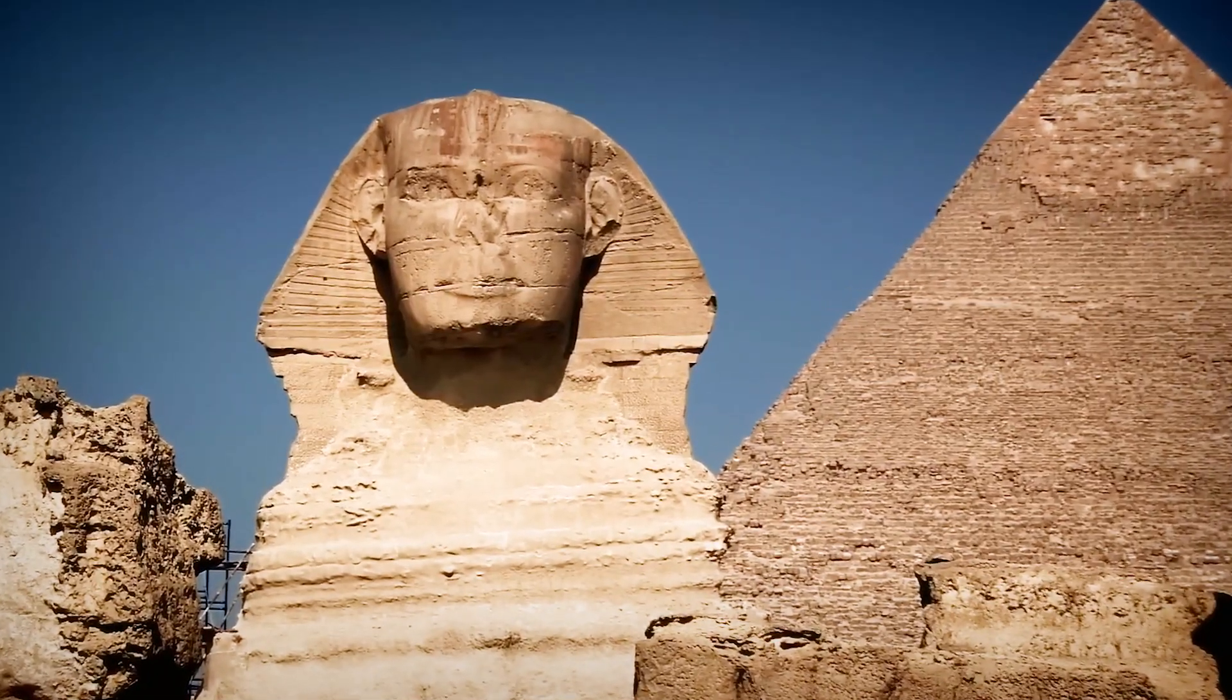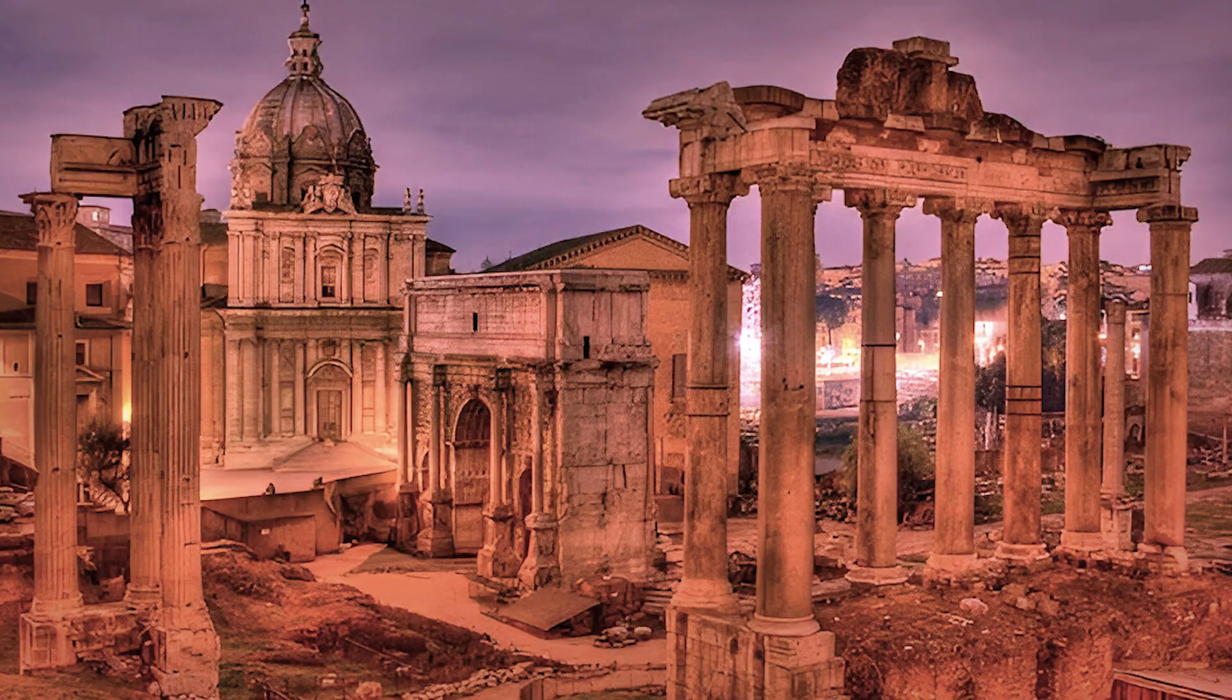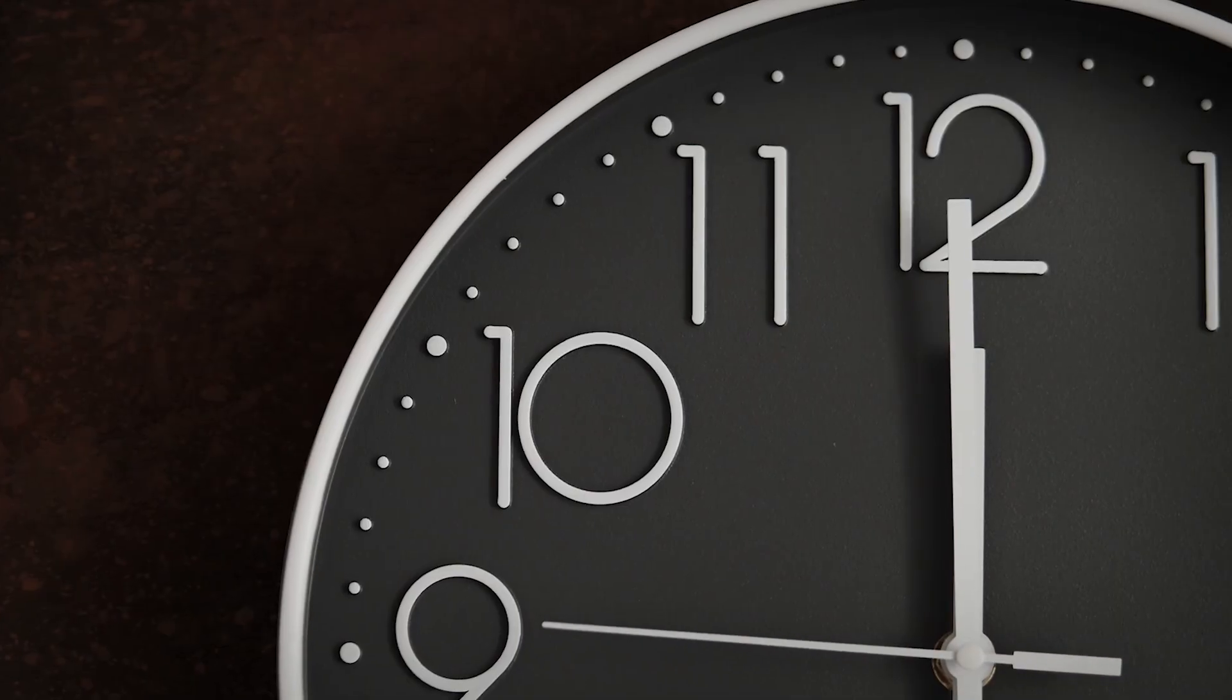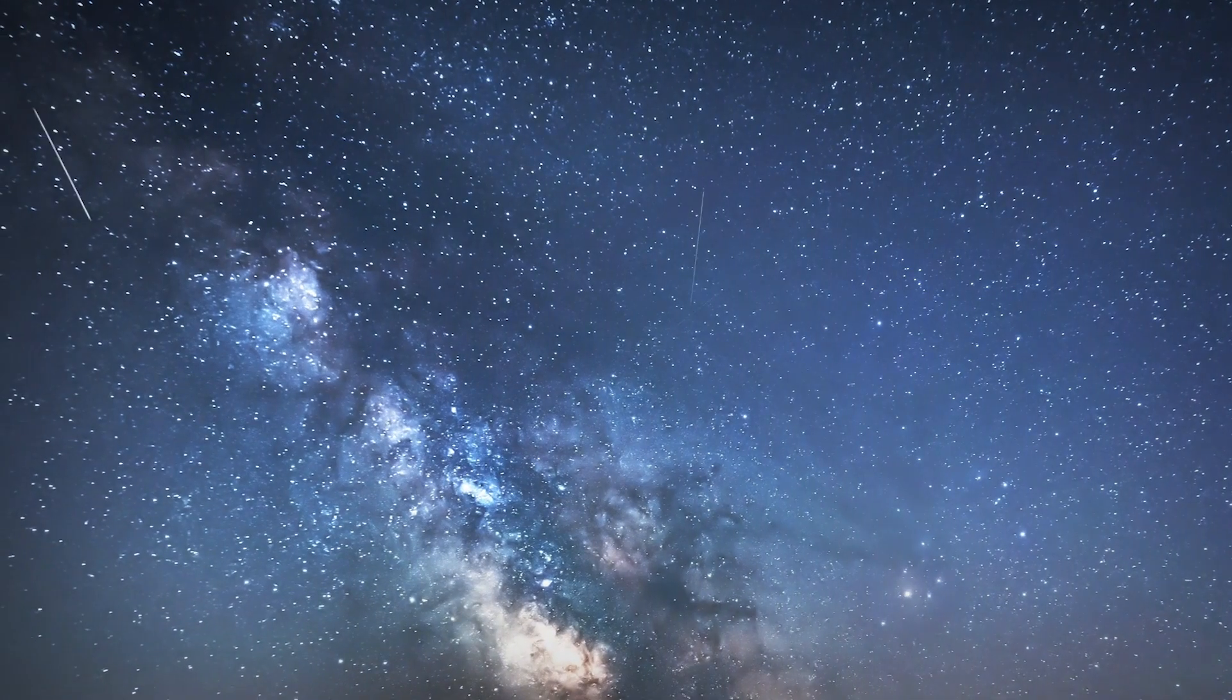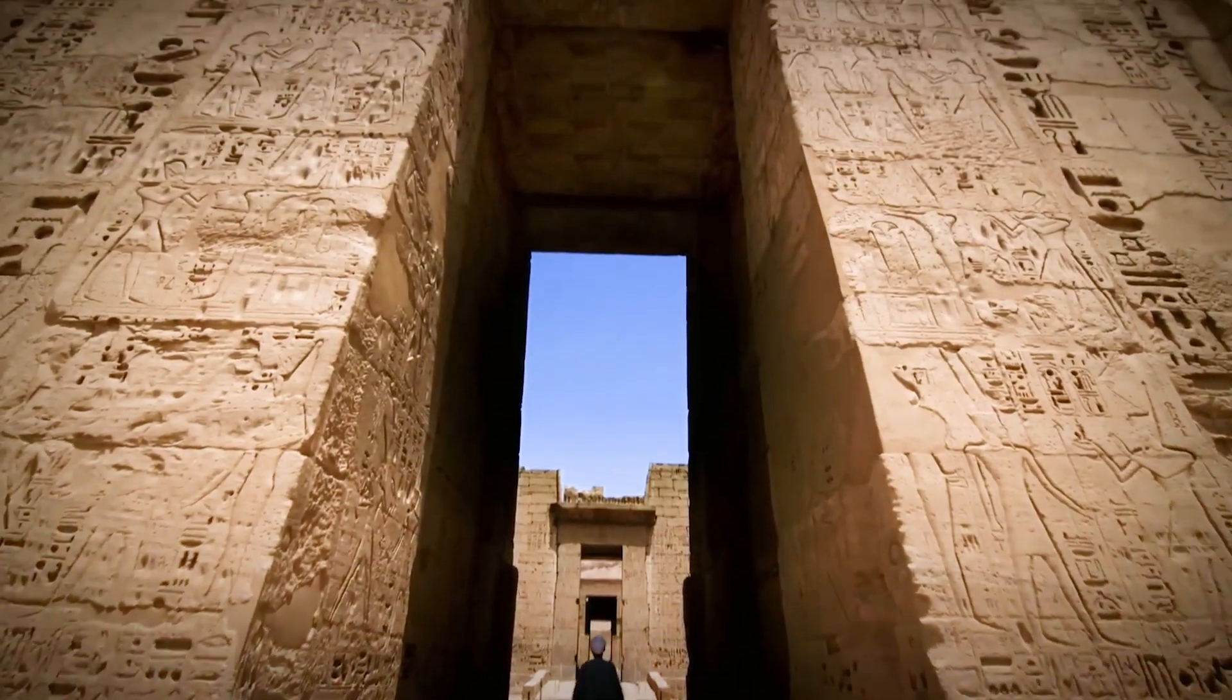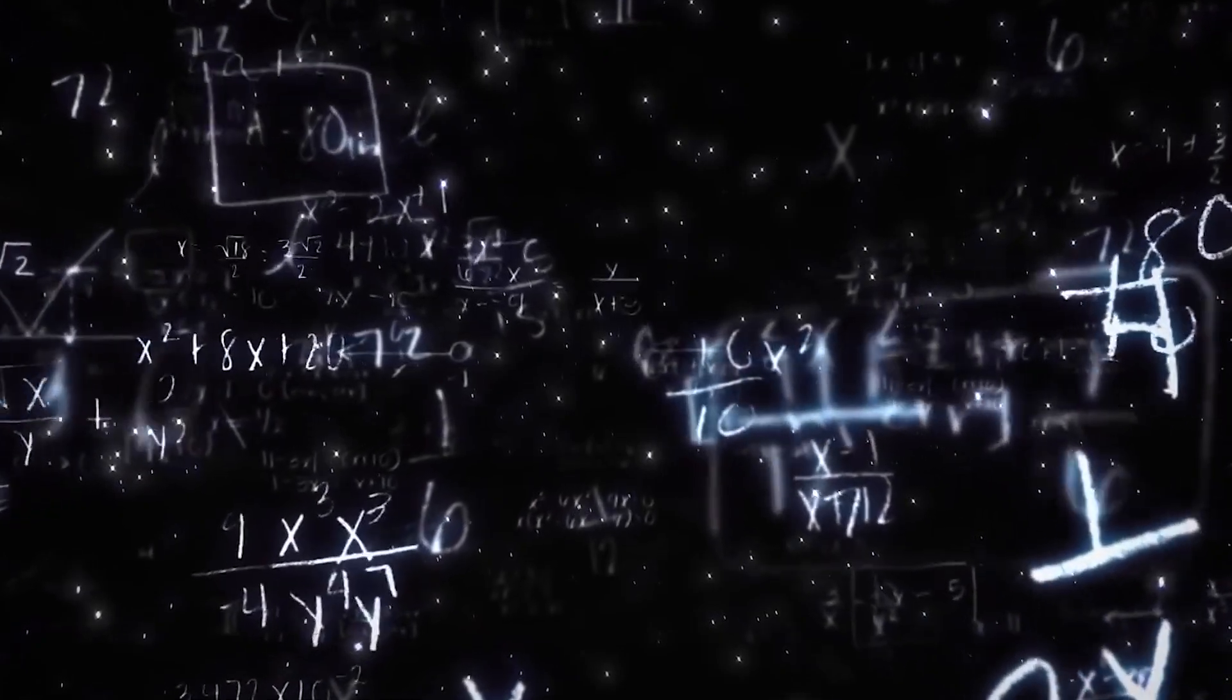This Egyptian innovation didn't just stay within their borders, it spread, influencing Greek and Roman civilizations and eventually the whole world. Over time, the 360-degree circle became a mathematical standard, a testament to the interconnectedness of timekeeping, astronomy, and geometry. It's a beautiful example of how the practical needs of ancient civilizations shaped the mathematical principles we use today.